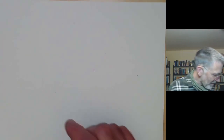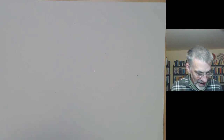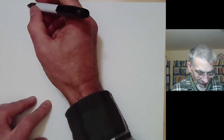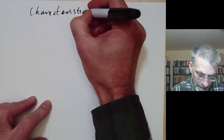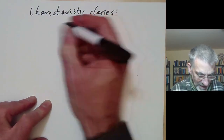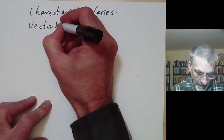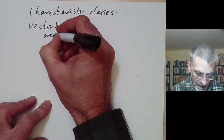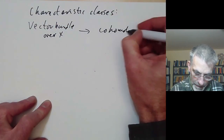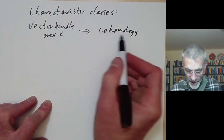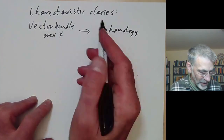The point is you should think of the Chow ring as being analogous to cohomology. I'm going to very quickly review characteristic classes. In algebraic topology, characteristic classes take a vector bundle over X to cohomology. In a little while we're going to do an analogue of this where we replace cohomology with the Chow ring, but let's just do cohomology for the moment and look at a simple example.